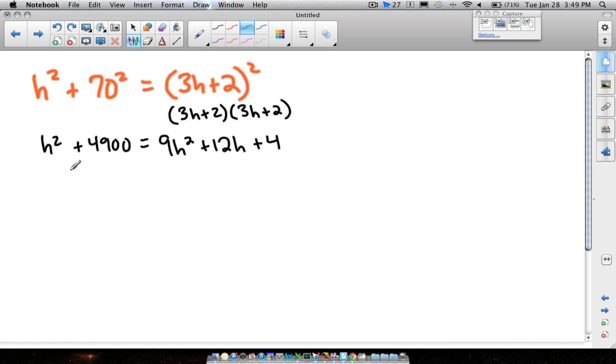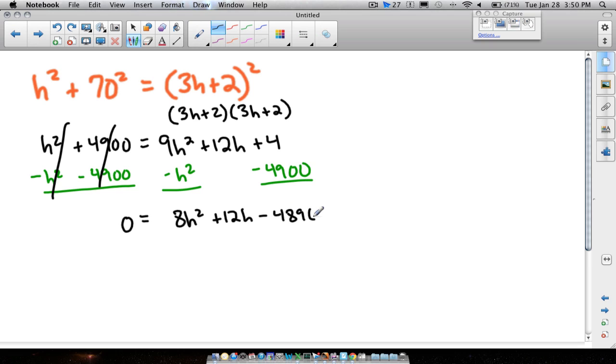And what I've told you in class is it's a good idea to force a zero sometimes. So let's move both of these values over. Let's subtract the h² from both sides and let's also subtract the 4900. Now what that does is it gives us zero over here. So we have 0 = 9h² - 1h² which is 8h² + 12h. And then if we take 4 - 4900, we get -4896.